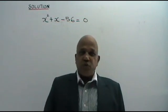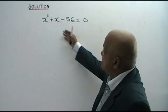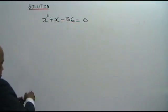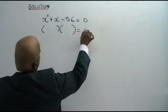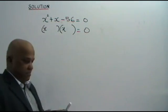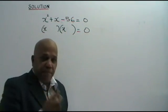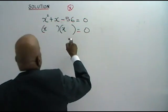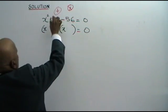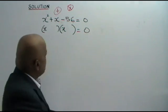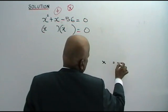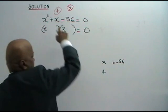Welcome to Example 3. x squared plus x minus 56 equals 0. Let's see how we solve this. As usual, two brackets equal to 0, and x times x equals x squared. Now we have to fill these two spaces. Think of two numbers: when multiplied together you get negative 56, and when added together you get positive 1.